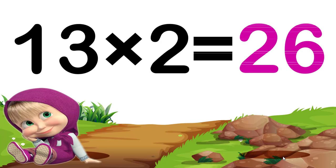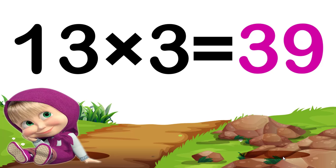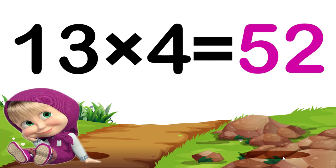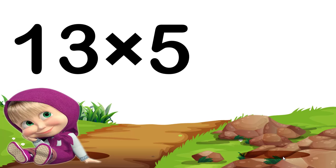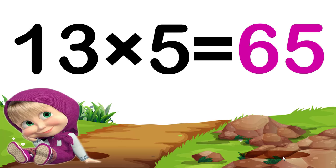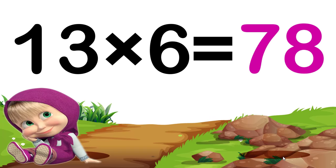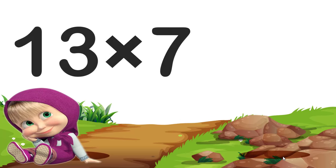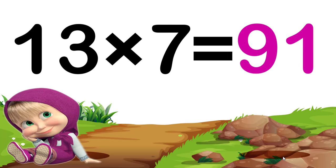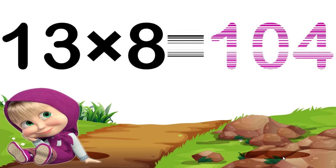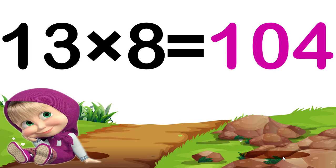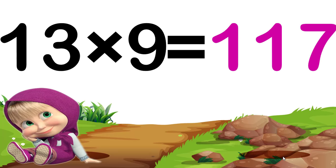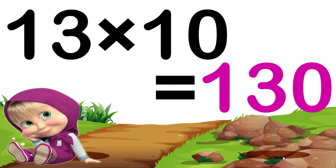13 1s are 13. Thirteen fives are sixty-five. Thirteen sixes are seventy-eight. Thirteen sevens are ninety-one. Thirteen eights are one hundred and four. Thirteen nines are one hundred and seventeen. Thirteen tens are one hundred and thirty.